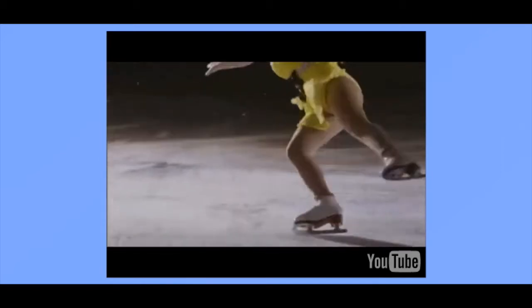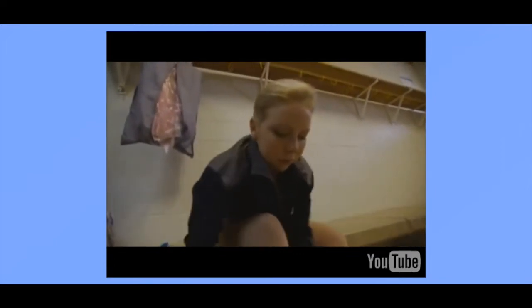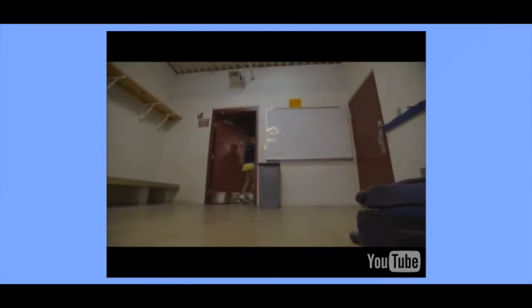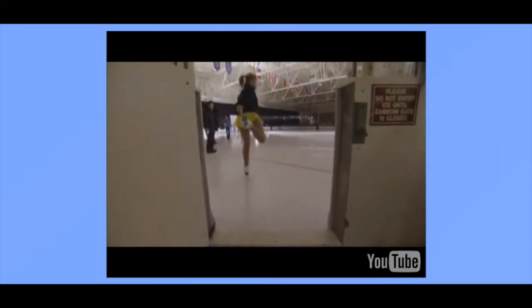For 17-year-old Rachel Flatt, the demands of training for the Olympics have to compete with other demands. I basically head to the rink at around 6 o'clock. I skate from 6:30 to 7:15. And then I go to school from 7:30 until about 12:30. And then from there, I go straight back to the rink.